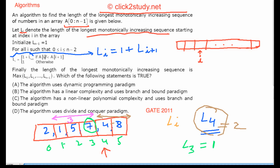Now back to the question. The algorithm says: initialize L[n-1] as 1 — that's the last element, the (n-1) index. There is nothing after it, so the longest monotonically increasing sequence starting there has length 1. Then, L[i] = 1 + L[i+1] if A[i] < A[i+1], otherwise L[i] = 1. So you express L[i] in terms of L[i+1].